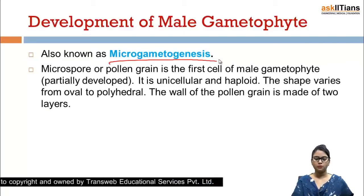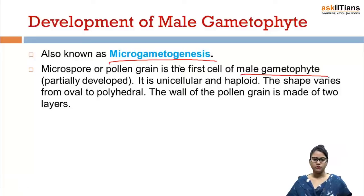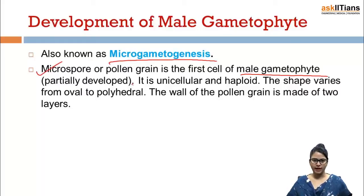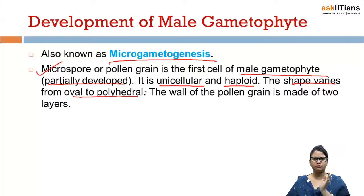Microspore or pollen grain is the first cell of male gametophyte. It is partially developed, unicellular, and haploid. The shape varies from oval to polyhedral, and various other shapes are present.